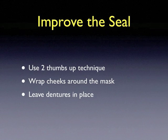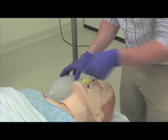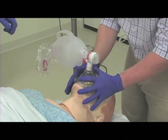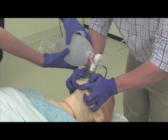Let's talk about improving the mask seal using the two thumbs up technique. If the patient has extra soft tissue around the face, wrap their cheeks up around the mask to improve the seal. Leave dentures in for bagging — dentures out for intubation. Dentures improve the mask seal by providing extra resistance for the mask to lean on. For two-person bagging with the parallel thumbs technique, use the thenar eminences to push the mask onto the face while pulling the jaw up into the mask with all four fingers of both hands. A second provider delivers ventilation.